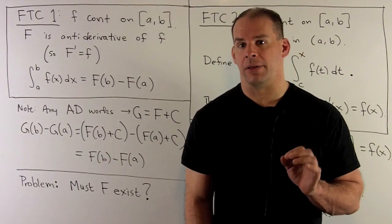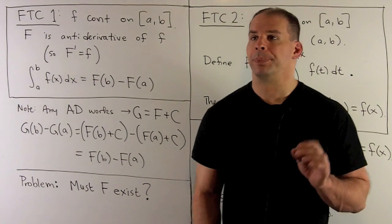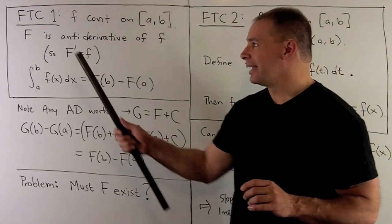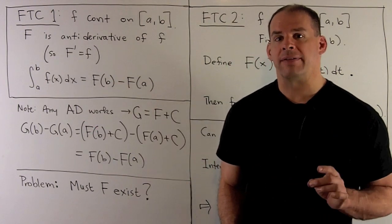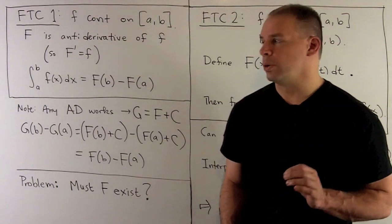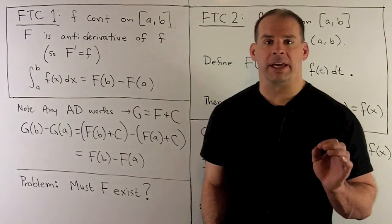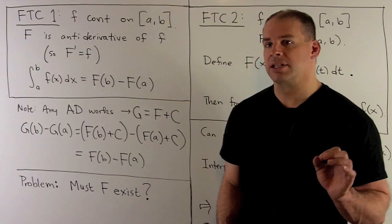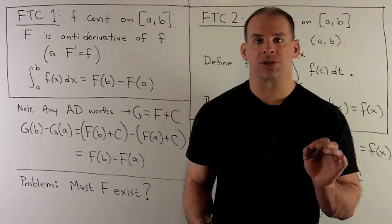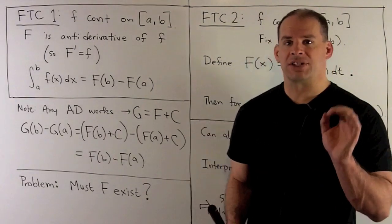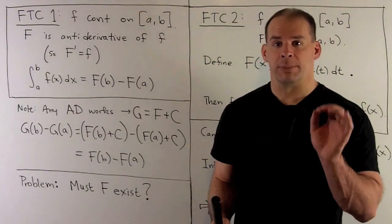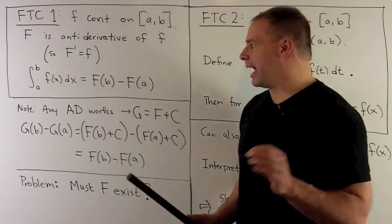Let's tie up some loose ends from the First Fundamental Theorem of Calculus. The statement is: we have f continuous on a closed interval [a, b], and capital F is an antiderivative of little f — meaning the derivative of capital F gives back little f. The conclusion is: the definite integral from a to b of little f of x with respect to x equals capital F evaluated at the endpoints, and we take the difference. This connects the definite integral, which we can think of as net area between the graph of f and the x-axis, and our antiderivatives.